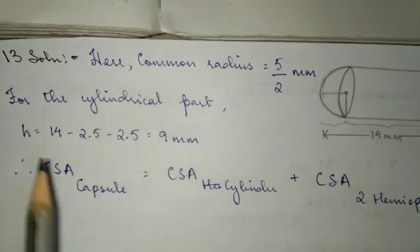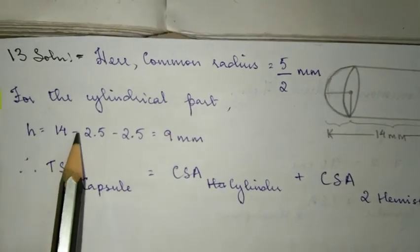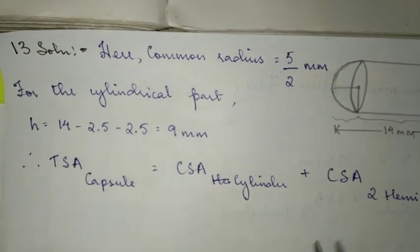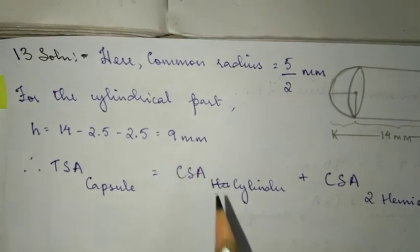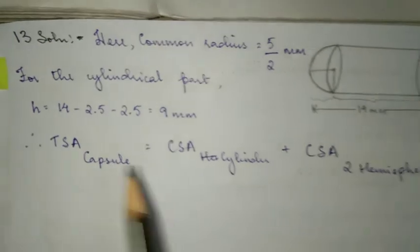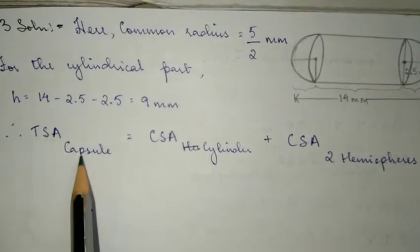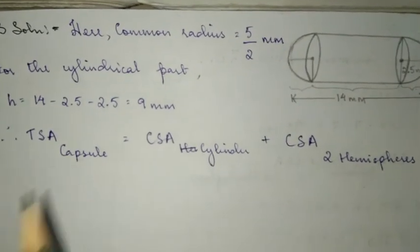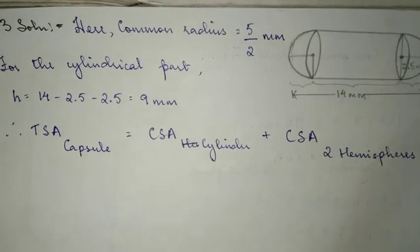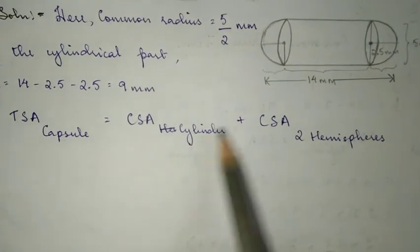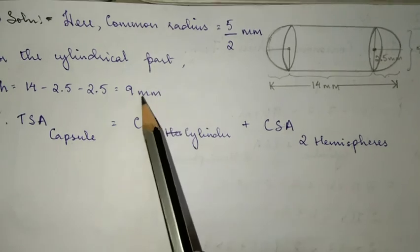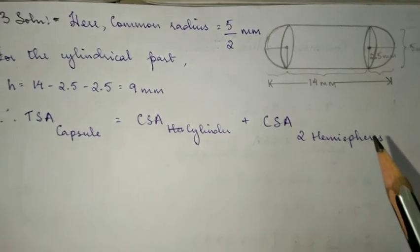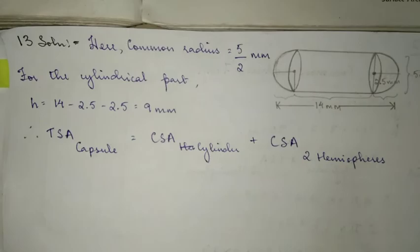Common radius is 5 by 2, which is 2.5, but for solving purposes I have left it as 5 by 2, okay? The rest of it is exactly the same. The capsule is solid. Your final answer will be in terms of millimeter square, okay?